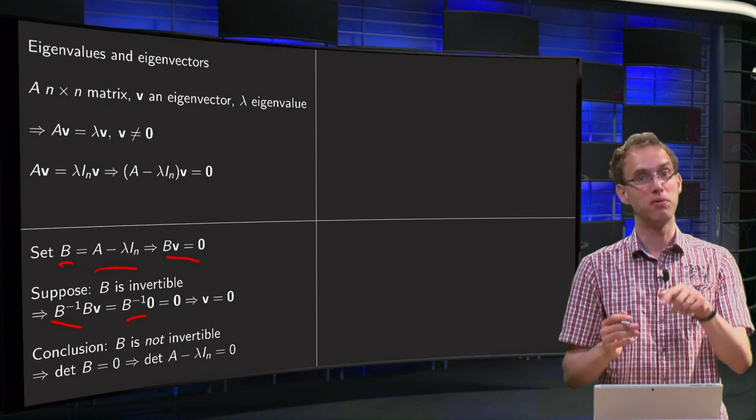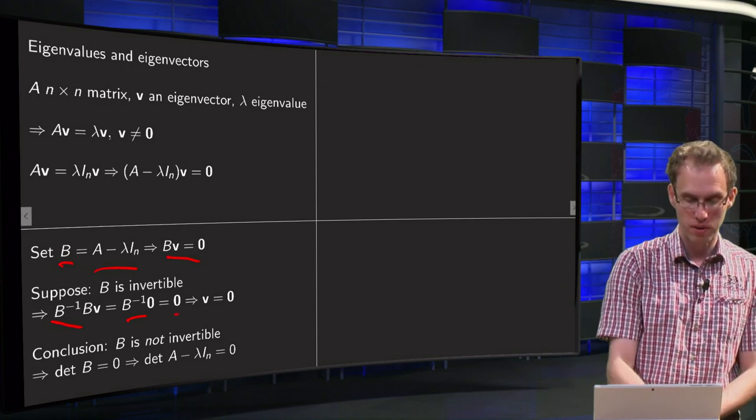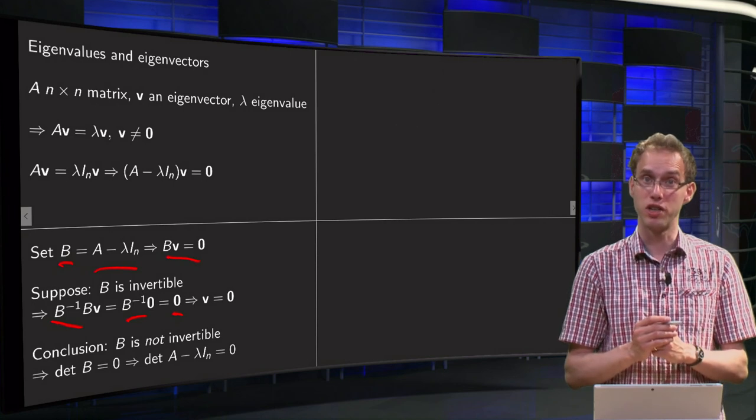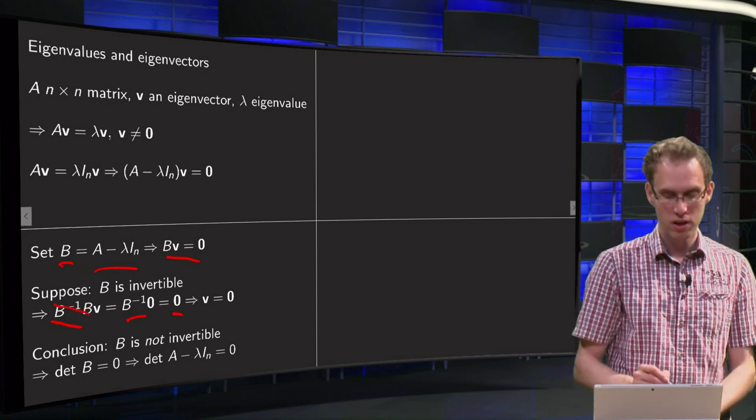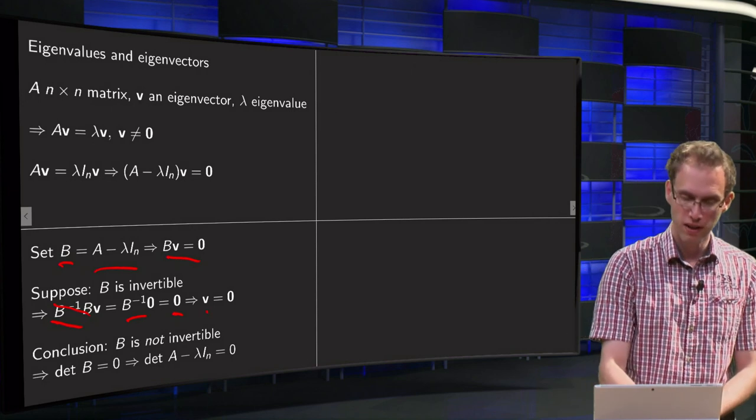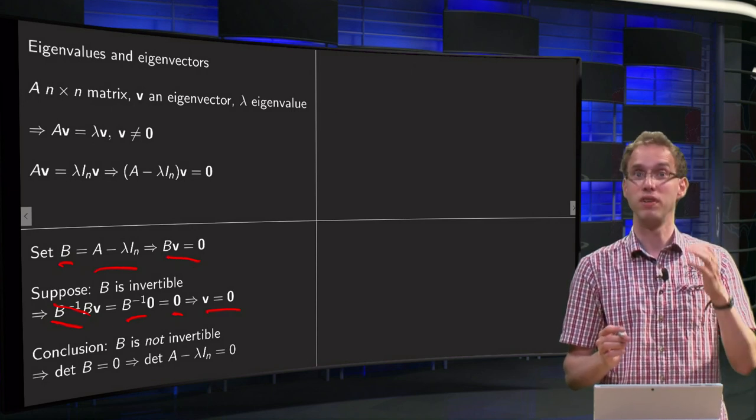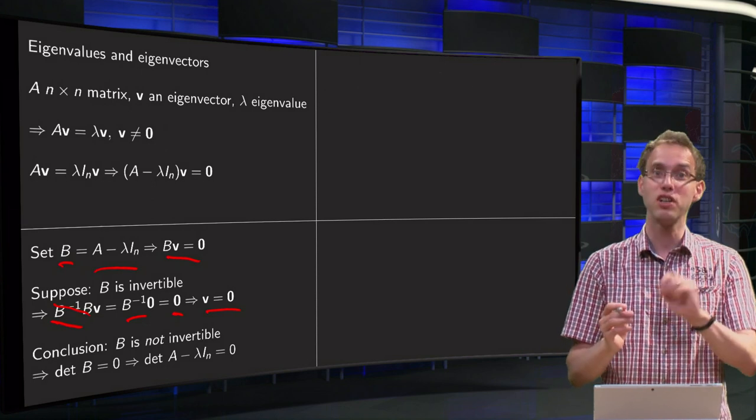Well, B inverse times zero vector is of course a zero vector, and B inverse and B will cancel out. So we end with V equals zero vector. But that's not allowed. V can be any vector, but not the zero vector.